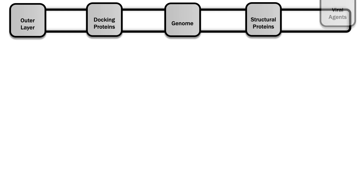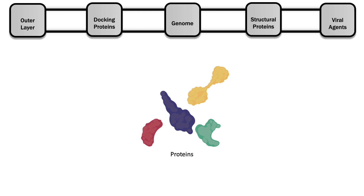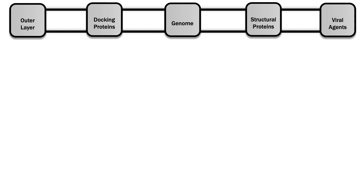We'll work through the structure of both viruses bit by bit — starting with the outer layer, followed by their docking proteins, then the genome, structural proteins, and other viral agents. When I say the word protein, I don't mean the protein powder you take to build muscles. In biological terms, proteins are molecules that our cells — and viruses — construct to survive and carry out basic functions. Many of the structures that make up viruses and even our cells are made out of proteins. On the blue shaded side we'll look at the coronavirus, and on the red side, HIV. Proteins usually serve many different functions, but today we'll look at their main ones in a general sense.